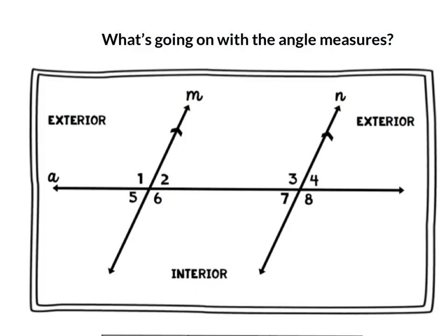What we want to figure out is what's happening with angle measures. If I look at a pair of alternate exterior angles, are they the same or supplementary? The strategy I use is color-coding. I start with one pair of vertical angles — vertical angles are equal — so here angle 1 and angle 6 are the same. Then those match up with corresponding angles: angle 1 corresponds to 3, and angle 6 corresponds to 8. So angles 1, 6, 3, and 8 are all the same.